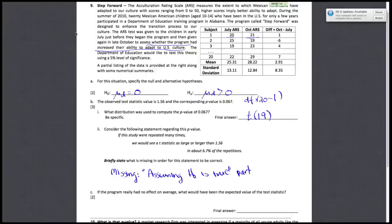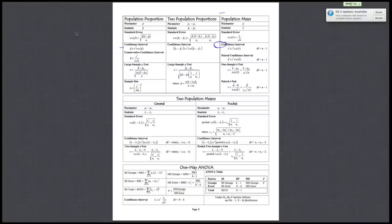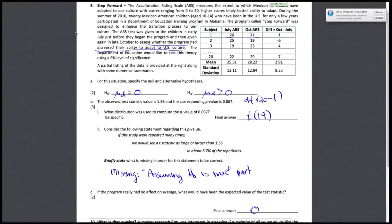All right, and then finally, if the program really had no effect on average, so if the null were actually true, what would have been the expected value of the test statistic? So, if your null is actually true, then your test statistic should be 0. Because, as you can see, your test statistic is d bar minus 0 and our H0 is that mu d is 0. So, your final test statistic would just be 0.